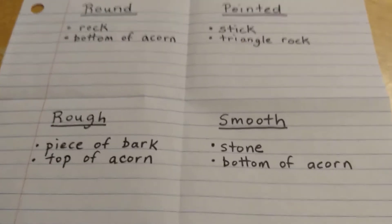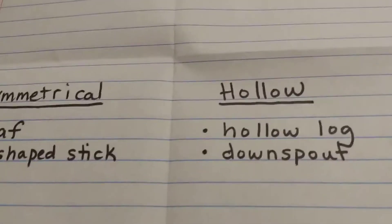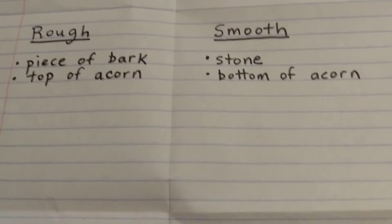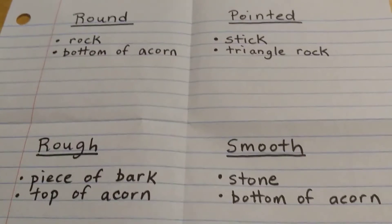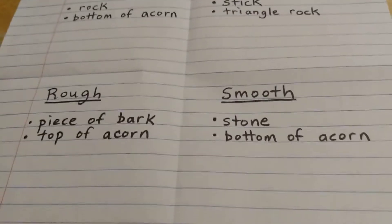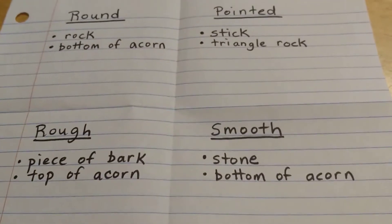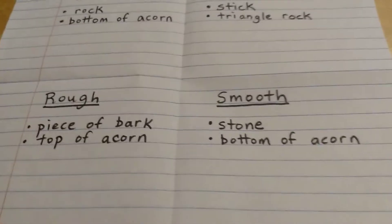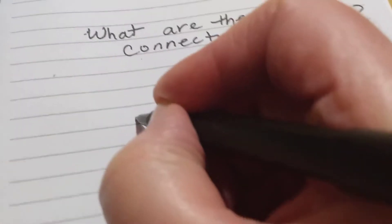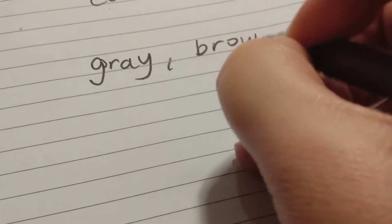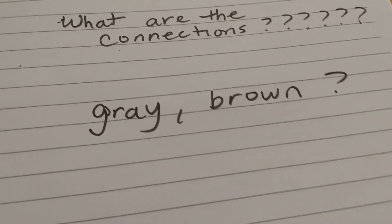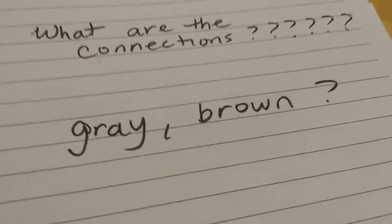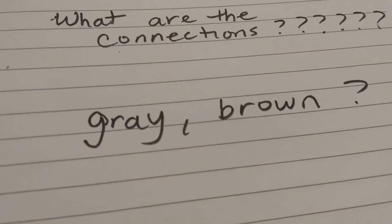Are they connected in the way they look, or in the way they make me feel when I think about them? I have a rock, I have a stick, I have a piece of bark, I have a log — a lot of them are either gray or brown. That seems to be something they all have in common. But does that interest me enough to write a poem about the colors gray and brown? I don't think so, actually. I feel like that's not it.